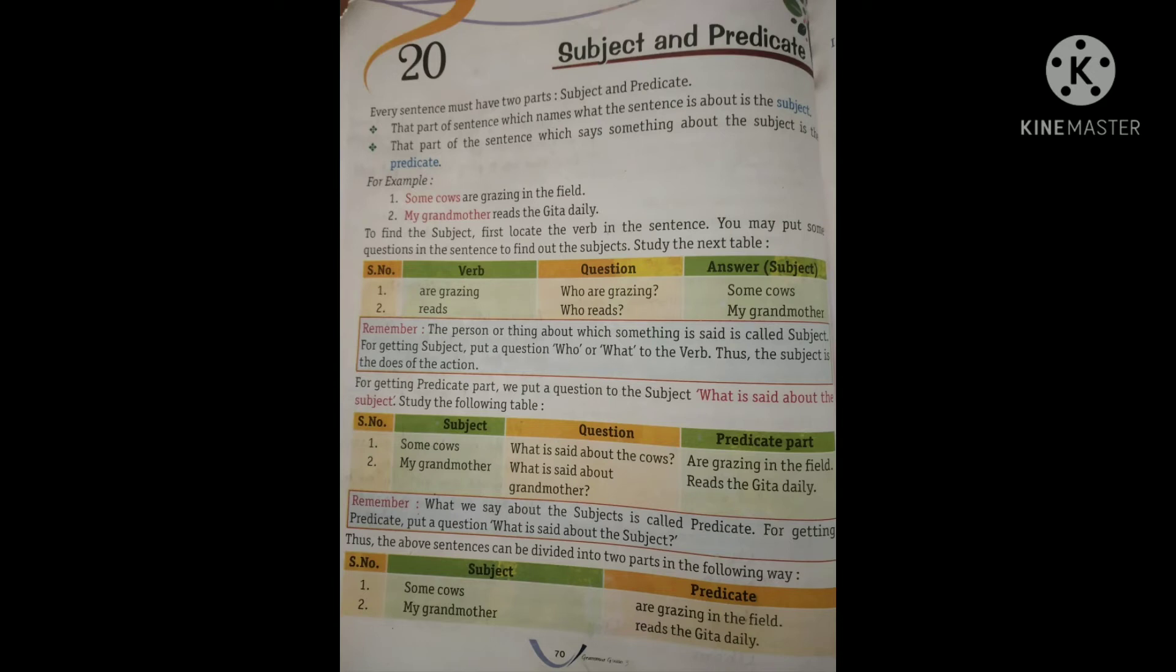Same way, agar aapko predicate pata nahi chal raha hai, toh dusri table mein aap dekh sakte hai ki aapko predicate kya se pata lagana hai, woh bataya gaya hai. Subject humein pata chal jayega ke sentence kiske baare mein hai, some cows ke baare mein. Toh question kya hoga, what is said about the cows? Cows ke baare mein kya bataya gaya hai? Are grazing in the field. Woh answer hai, toh woh predicate part hua.